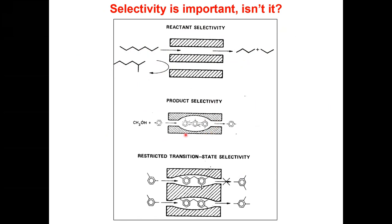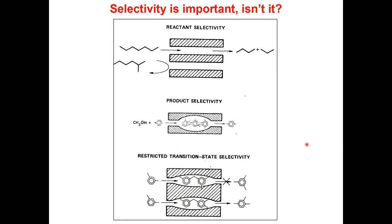There are three types of selectivity in zeolites. First, reactant selectivity — one reactant can go inside but another cannot. Second, product selectivity — both reactants can react inside, but only a para-substituted product can come out because the others don't fit the pore size. Third, restricted transition state selectivity — a larger transition state cannot fit inside the pore, but a smaller one can. All three come into play when designing the catalyst and performing the reaction.